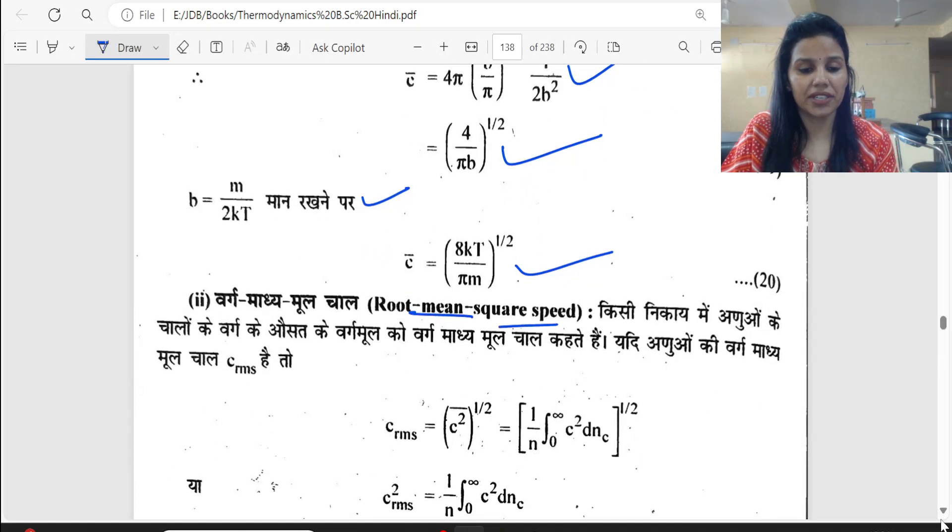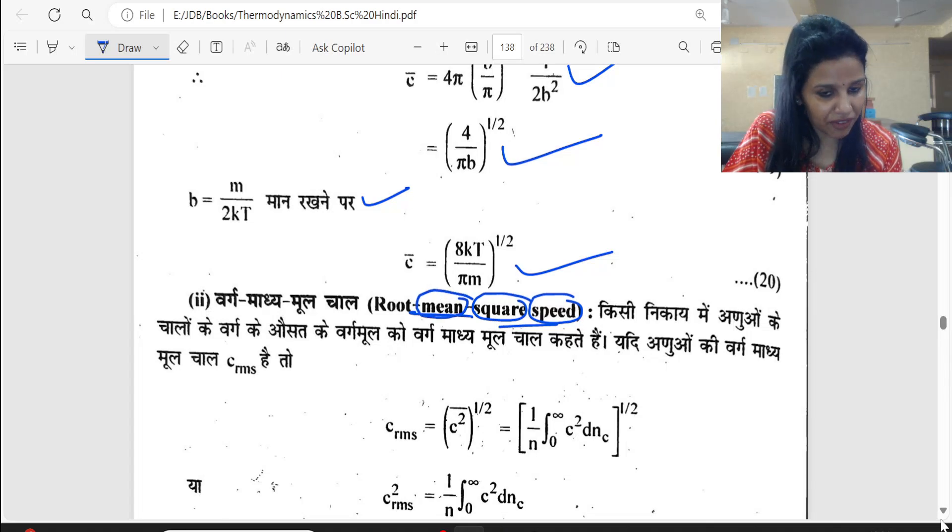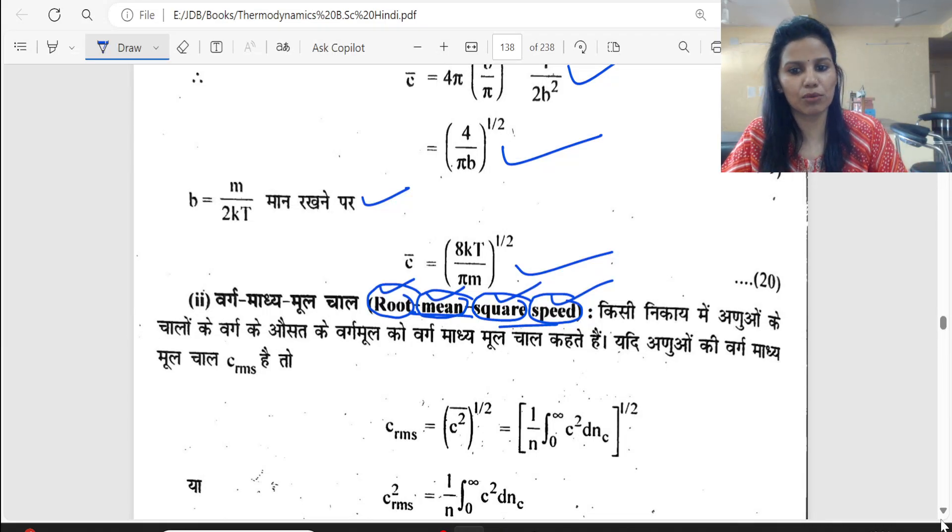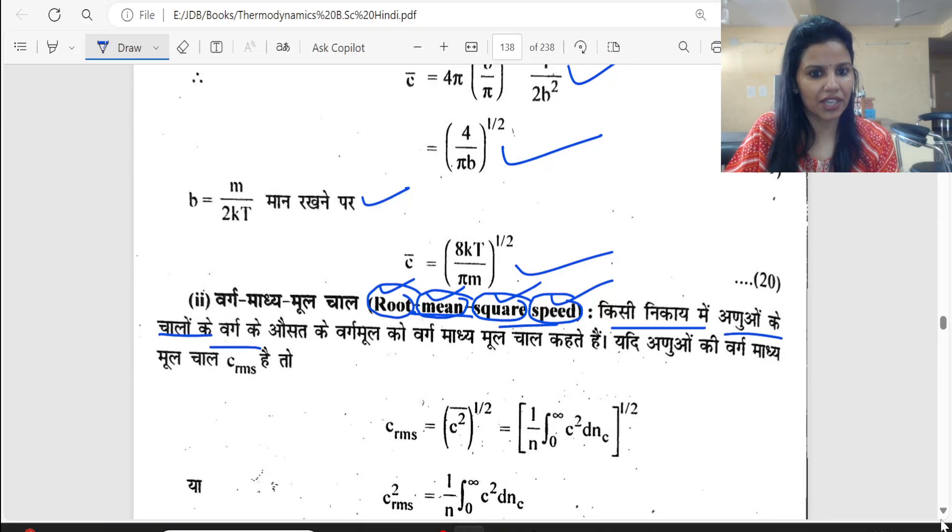Besides this, root mean square speed - you have to go in reverse. For the given particles, first take the speed, square the speed, take the average of the square, and take the square root of the average. We call this root mean square speed.